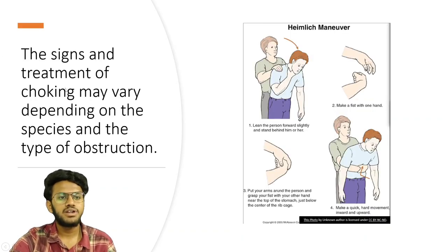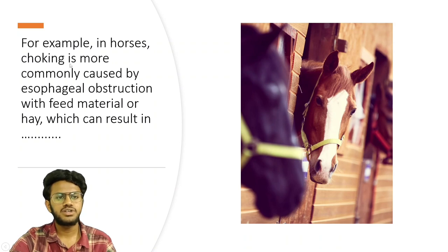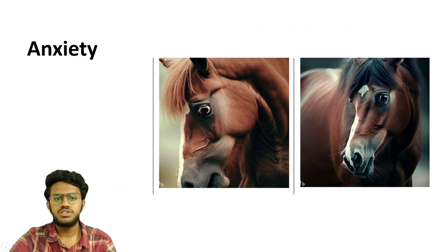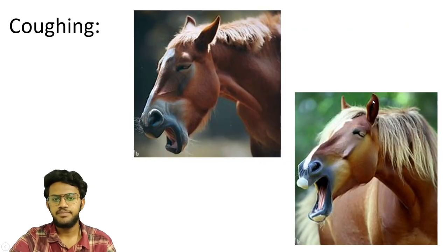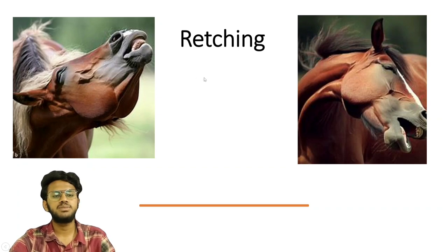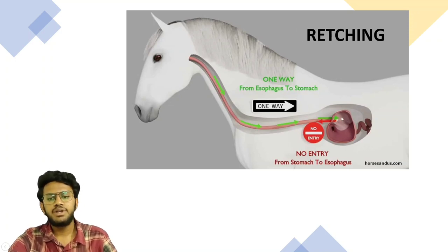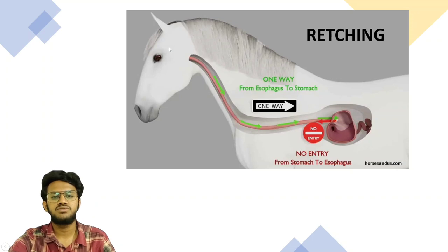The signs and treatment of choking may vary depending on the species and type of obstruction. In horses, choking is more commonly caused by esophageal obstruction with feed material, resulting in nasal discharge of feed. Some horses show anxiety behavior, coughing, and retching — retching means they feel like vomiting but actually cannot, because of the tough cardiac sphincter in horses. The pressure developed in the stomach during vomiting does not permit food to pass from the stomach back to the esophagus; there is only a one-way passage from esophagus to stomach.